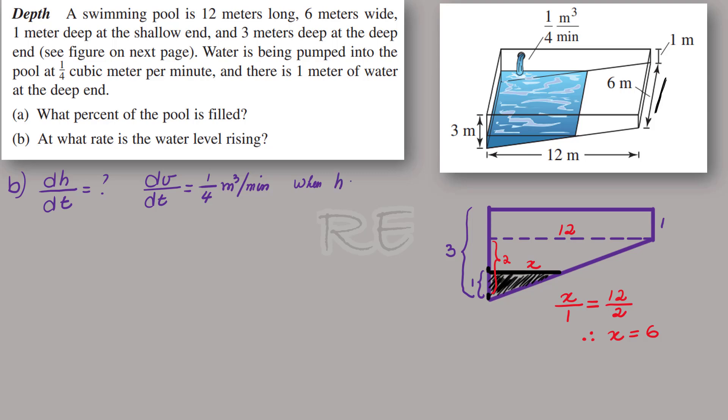When the height, h, is equal to one meter, and the width will not change. The width is 6 meters.